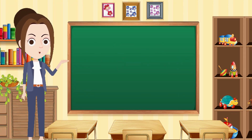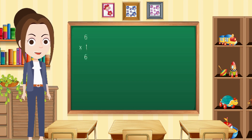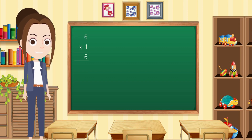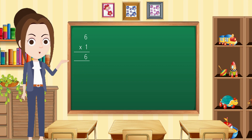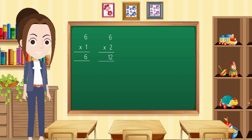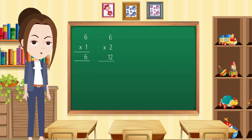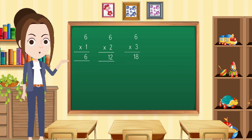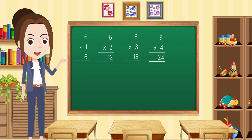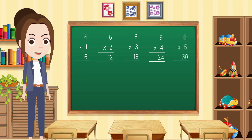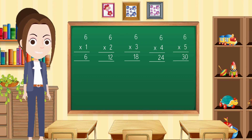Now we will learn the multiples of 6. 6 × 1 = 6. 6 × 2 = 12. 6 × 3 = 18. 6 × 4 = 24. 6 × 5 = 30.